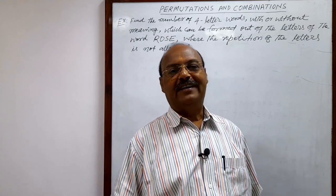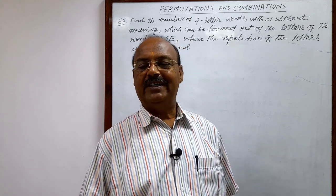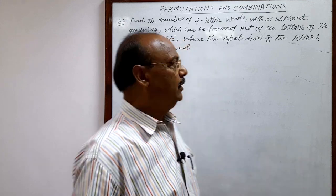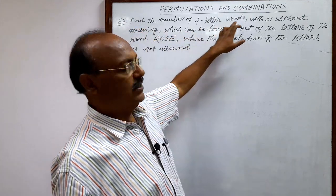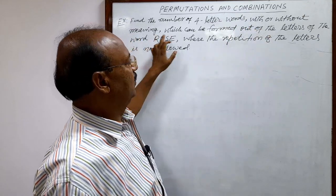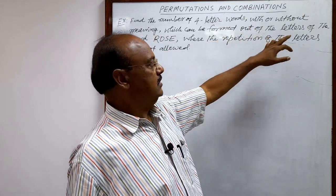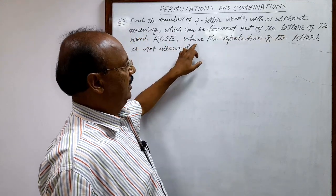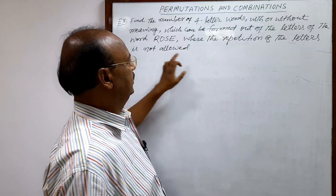Welcome students. Let us see a very interesting question from the chapter permutations and combinations. The question is: find the number of four-letter words, with or without meaning, which can be formed out of the letters of the word ROSE, where the repetition of the letters is not allowed.